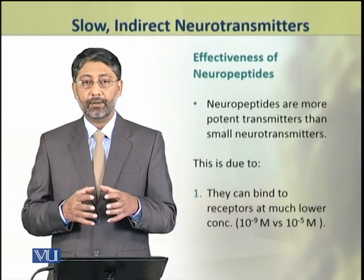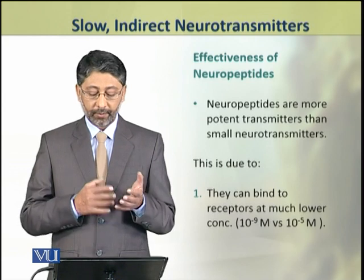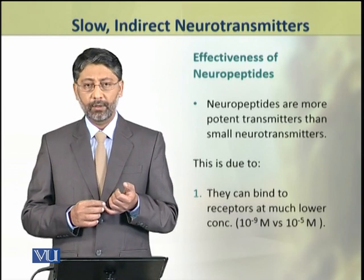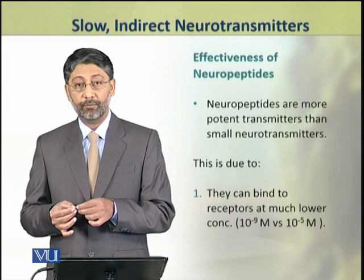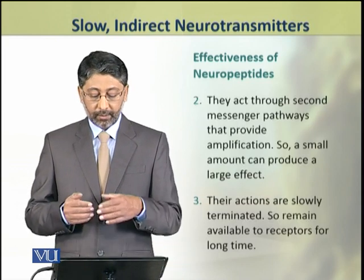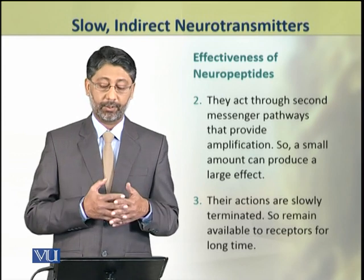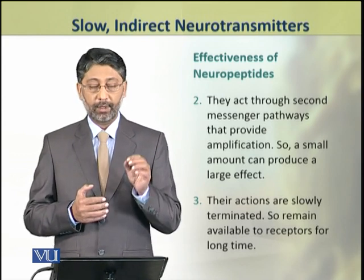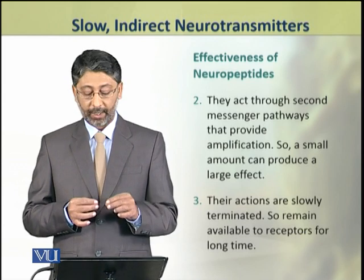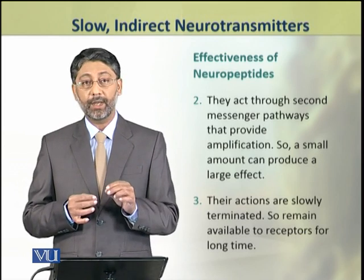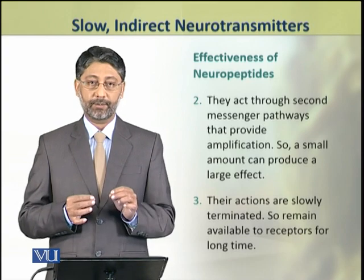Neuropeptides are more potent neurotransmitters than small molecule neurotransmitters for three reasons. First, they bind at very low concentrations, being active at 10⁻⁹ molar compared to 10⁻⁵ molar for other substances. Second, they act through second messenger pathways that provide amplification, so a small amount produces a large effect. Third, their actions are terminated very slowly, so they remain available to receptors for a long time.